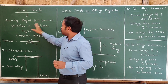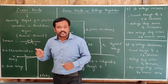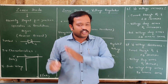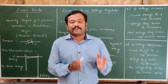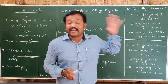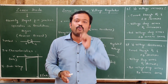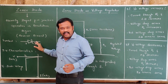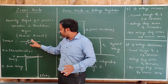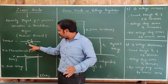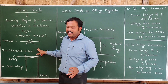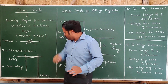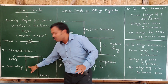It is a heavily doped PN junction that operates in the breakdown region, and we know that the breakdown region is in the reverse bias. We have studied about the IV characteristics — in that breakdown region we can see the Zener diode works. The symbol of the Zener diode is similar to the diode itself, but there will be a Z marking. This side is the P side and this side is the N side. The IV characteristics of the Zener diode show the breakdown region.